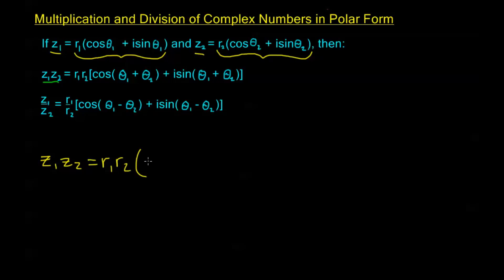I can move R₂ in front of this block, and I get r₁ times r₂ multiplied by (cos θ₁ + i sin θ₁) multiplied by (cos θ₂ + i sin θ₂).